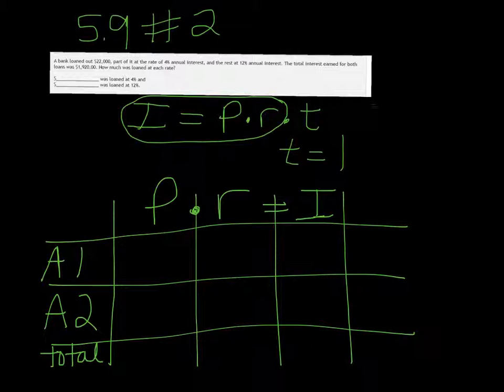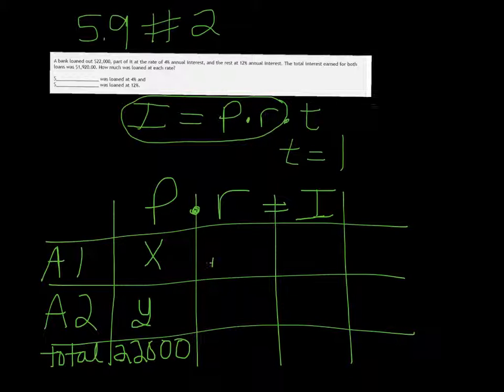It says the bank loaned out $22,000. Part of it went in one account, part of it went in another. So the total was $22,000. So we don't know how much went in account one or in account two. But they're not necessarily the same, so we're going to give them two different variables, X and Y.